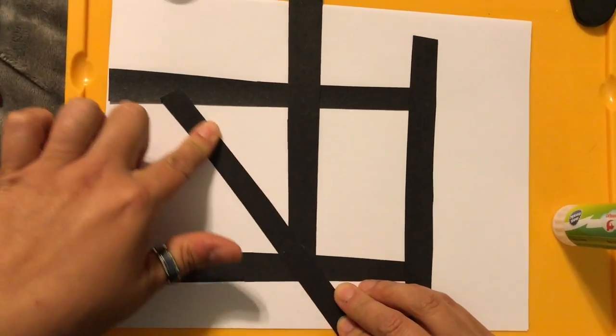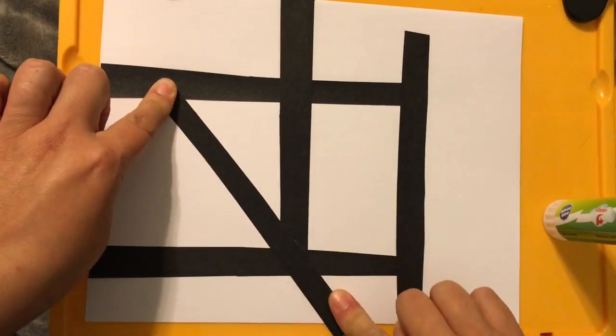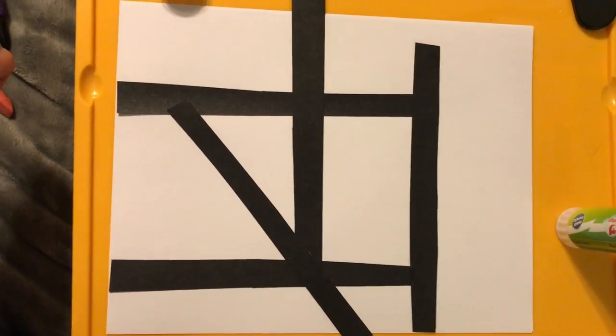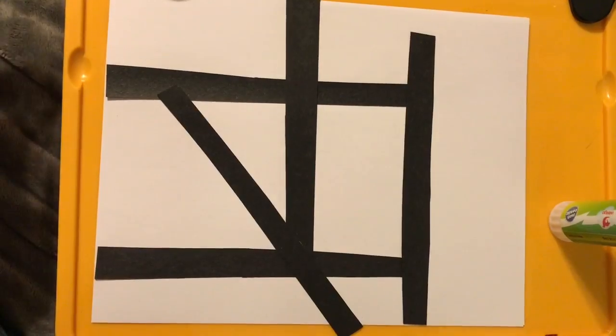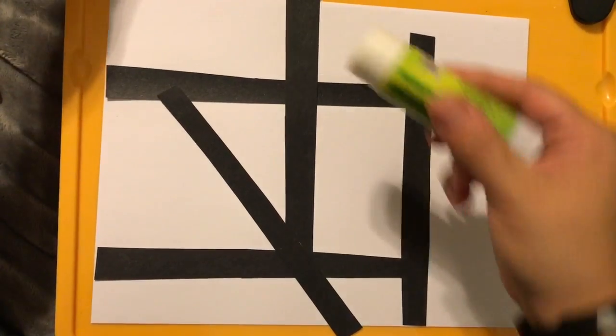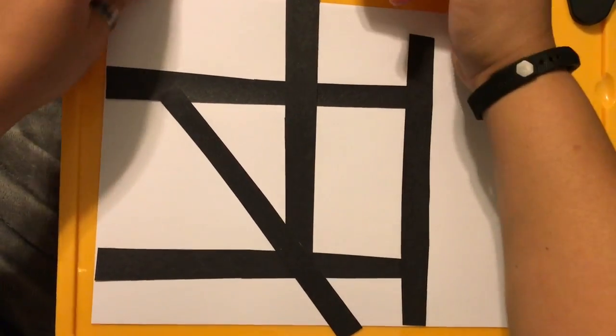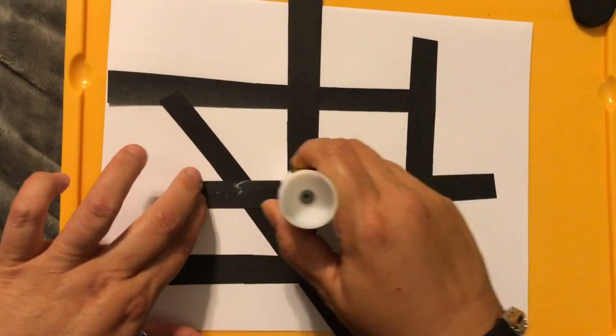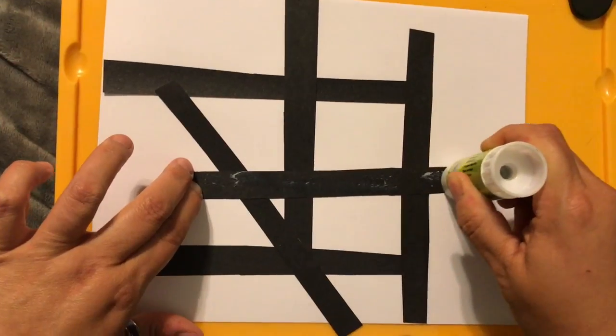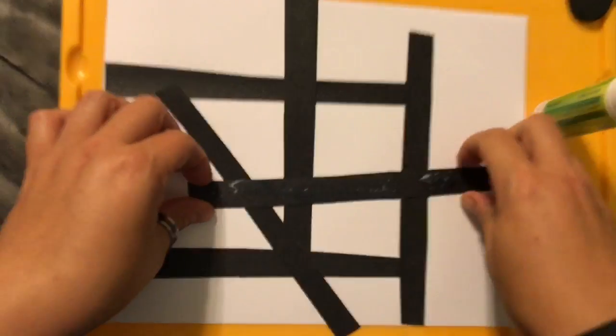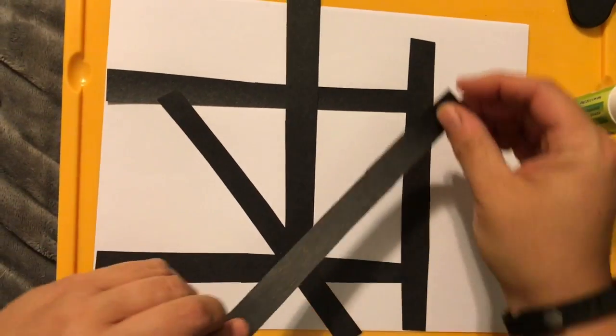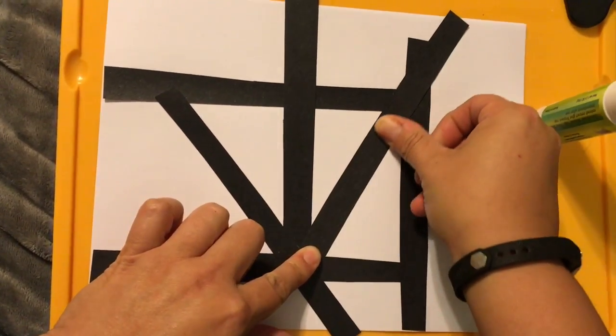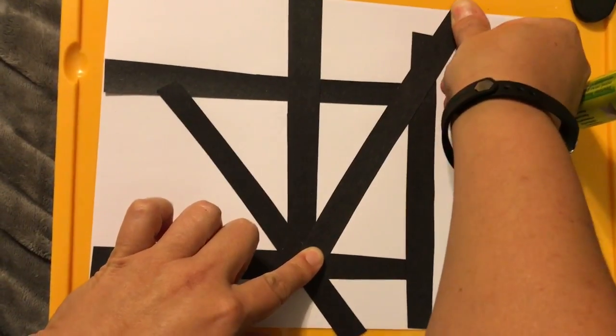Now look what happens when we put a diagonal line down. What new shape have we created on our paper? That's right, it's a triangle. Let's see if that happens if we go diagonally the other way. A strip of paper, some glue stick. Looks like we are definitely working on some triangles here.